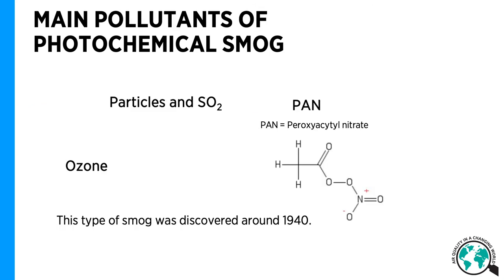Photochemical smog consists of high concentrations of sulfur dioxide and particles, like London-type smog, but additionally also of ozone and PAN. High concentrations of ozone can cause respiratory problems — for example, aggravation of asthma, reduced lung functioning, and respiratory infections and inflammations.